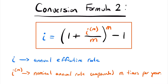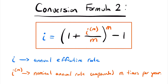Our second conversion formula allows us to get an annual effective rate i from a nominal annual interest rate. From the first formula, the effective non-yearly rate equals the nominal rate divided by m. Substituting j into the standard conversion formula — (1 + j)^m − 1 — gives us the annual effective rate. It's the same formula we already know, just adapted to account for the nominal annual rate.